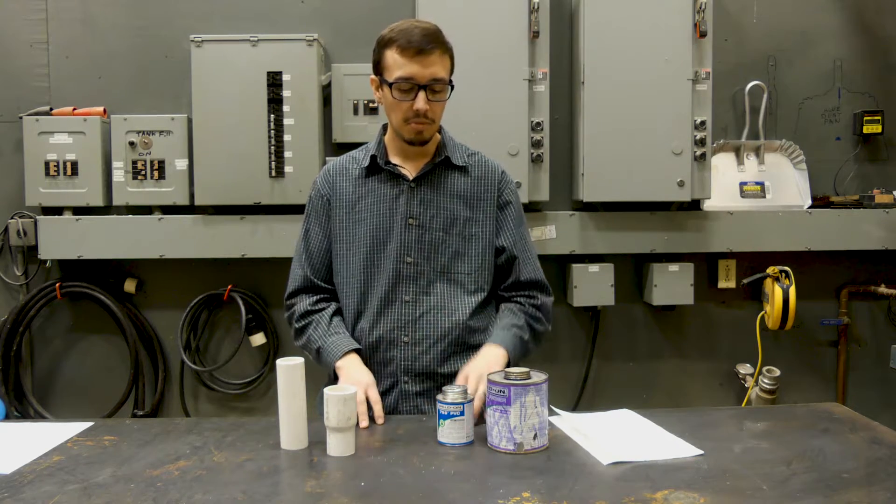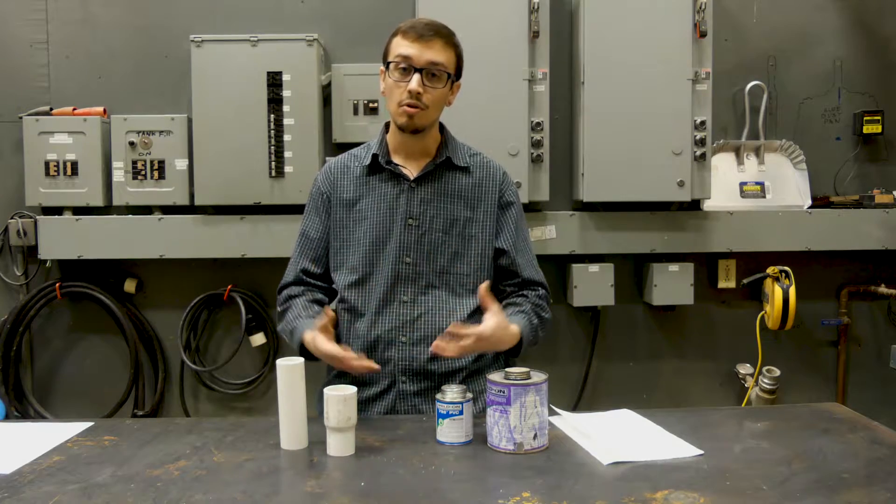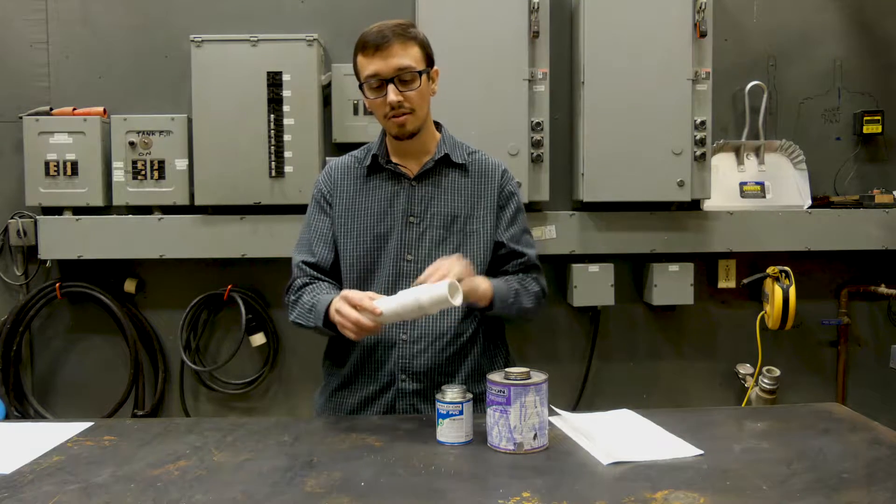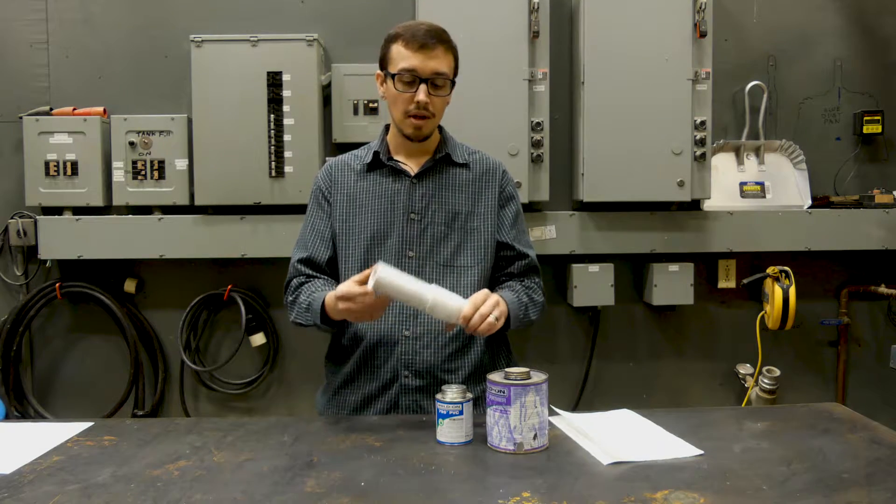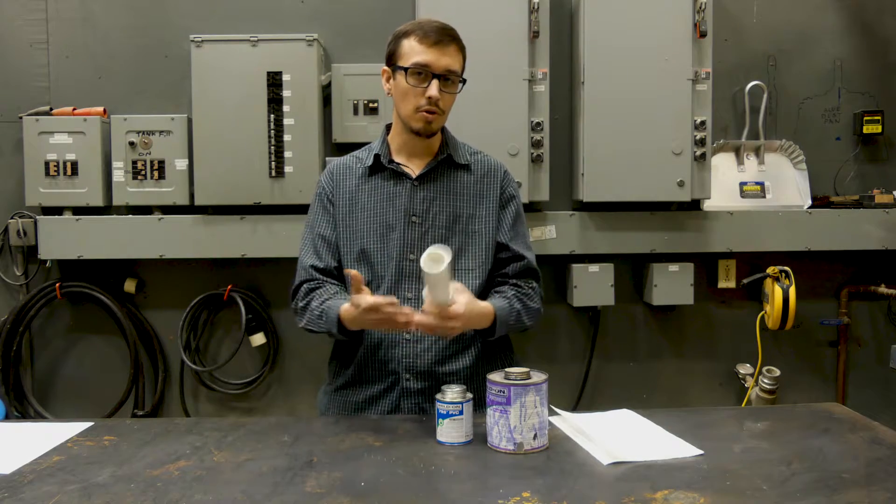Now, commonly people will refer to PVC cement as glue. In reality, it's more of a cement because what it actually does is fuses the pipes together when applied properly, whereas a glue simply sticks two things together with the glue in between.